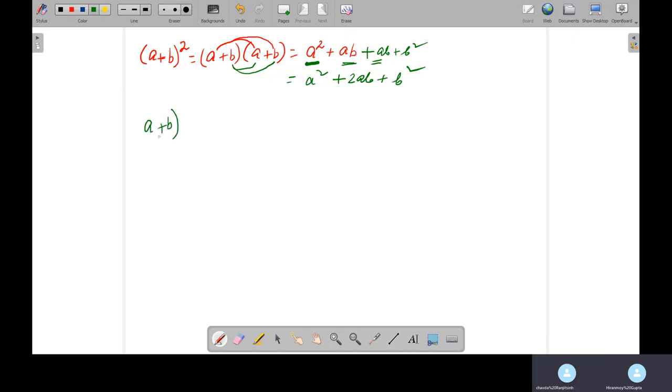Now if I have A plus B whole cube, so I should write A plus B, A plus B and A plus B, correct? Yeah. I will tell you what you are getting. A plus B whole square into A plus B. Do you agree with me? Yeah, I agree with that. Yeah. A plus B whole square means already we have got this expression.